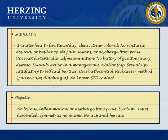A sample note for male genitourinary system assessment: Subjective data — urinates four to five times a day, clear or straw-colored, no nocturia, dysuria, or hesitancy, no pain, lesions, or discharge from the penis, does not do testicular self-examination, no history of genitourinary disease, sexually active in a monogamous relationship, sexual life satisfactory to self and partner, uses birth control via barrier method with partner using diaphragm, no known STD contact.